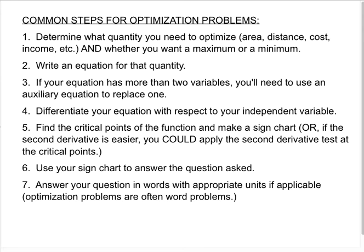If your equation has more than two variables, you're going to need to use some auxiliary equation to replace a variable. Differentiate your equation with respect to your independent variable. Find the critical points of the function and make a sign chart. Or if the second derivative is super easy, you could apply the second derivative test at the critical points. Use your sign chart to answer the question asked. Answer your question in words with appropriate units if applicable. Generally, optimization problems are word problems, so units are often in play.